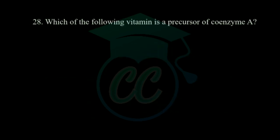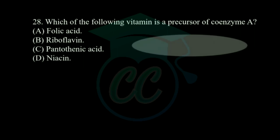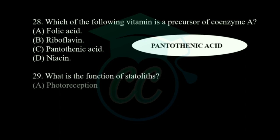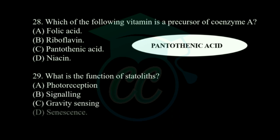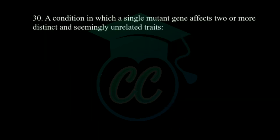Next question: which vitamin is a precursor of coenzyme A? Options: folic acid, riboflavin, pantothenic acid, and niacin. The vitamin which is a precursor of coenzyme A is pantothenic acid. Next question: what is the function of statoliths? Options: photorespiration, signaling, gravity sensing, and senescence. The function of statoliths is gravity sensing.